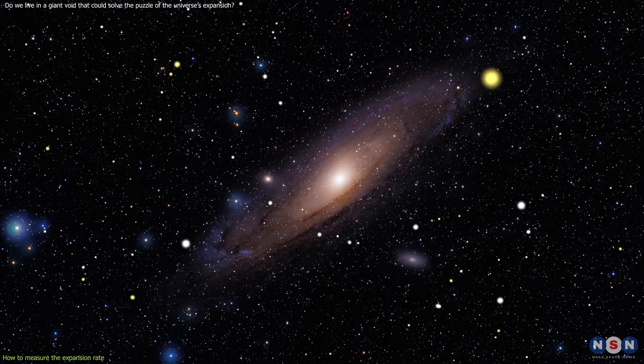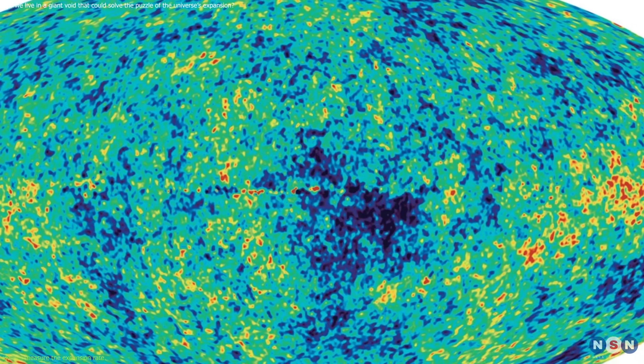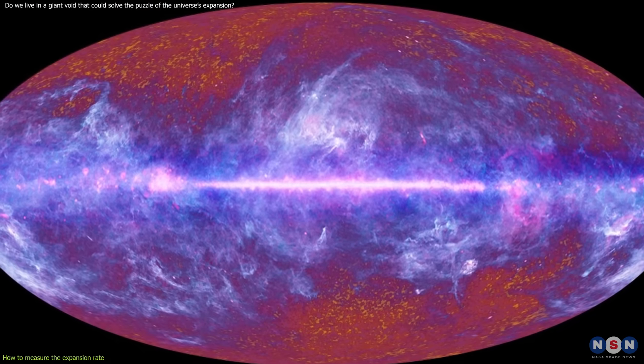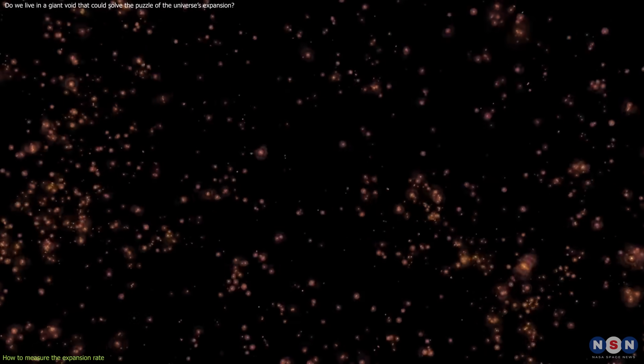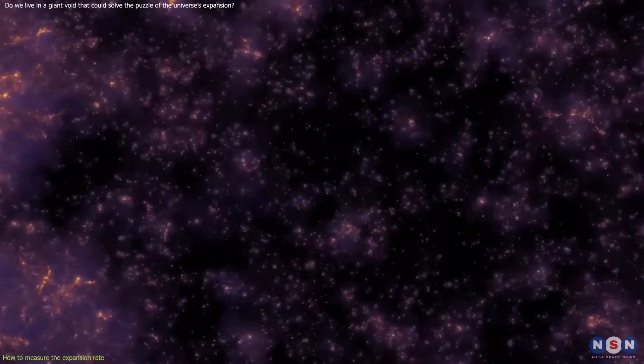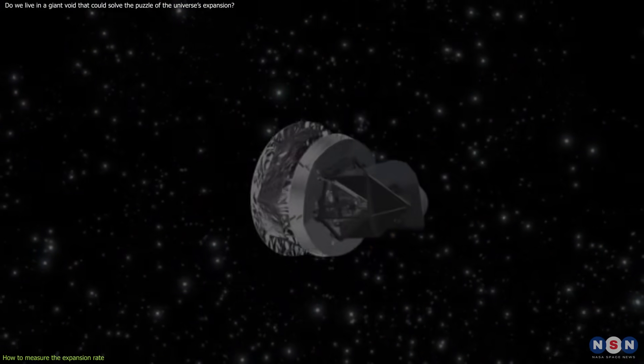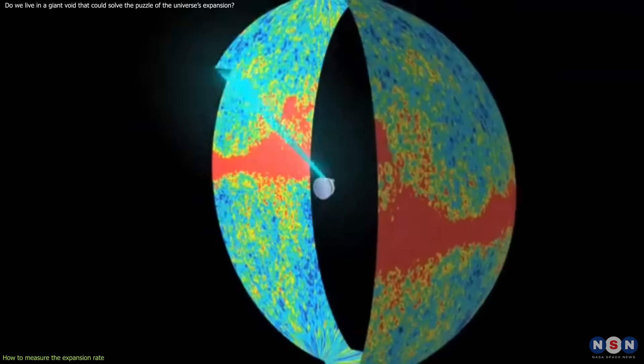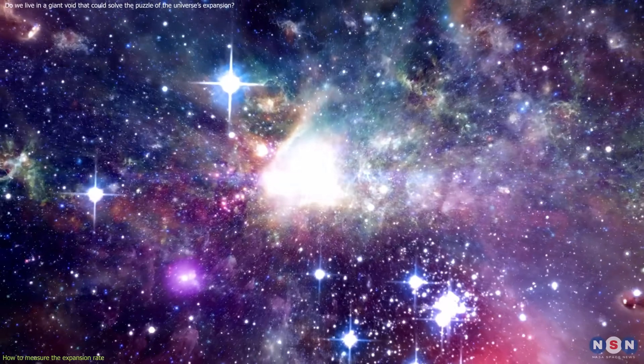There are several ways to measure the distance and speed of a galaxy, but the two most commonly used are based on the Cosmic Microwave Background, CMB, and the Type Ia supernovae. The CMB is the oldest radiation in the universe, emitted about 380,000 years after the Big Bang, when the universe became transparent to light. It is like a snapshot of the early universe, and it contains tiny fluctuations in temperature and density that reveal the properties of the universe at that time. By analyzing the CMB data from the Planck satellite, which mapped the CMB with unprecedented precision, we can infer the Hubble constant and other cosmological parameters, such as the density and composition of the universe.